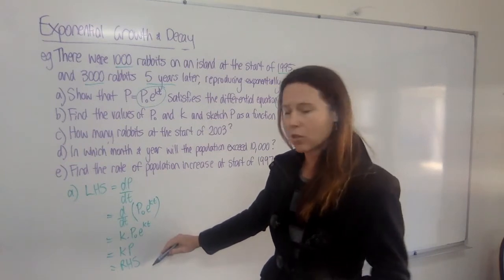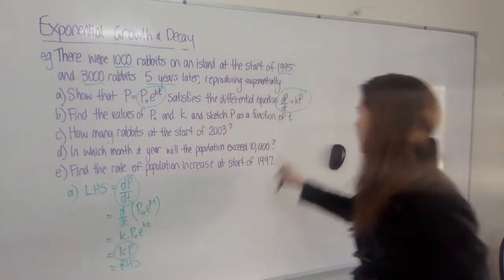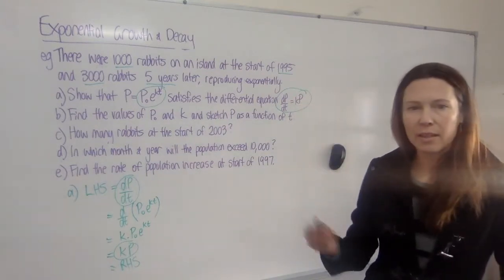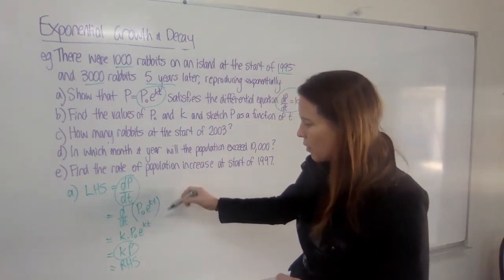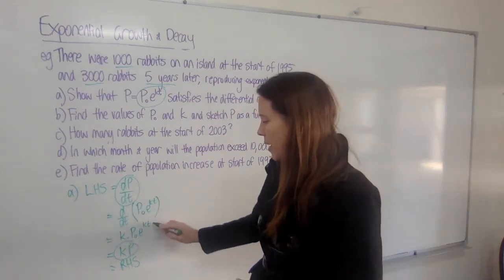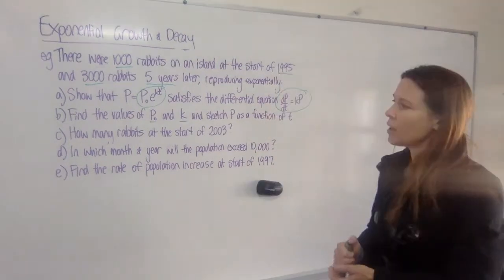Now, you need to have all of these steps. And because it's a show that question, we know that dP/dt is equal to kP. We were given that. So then the lines of working that you need will be both of these. And you're proving that you know how to differentiate this by bringing the k down, and then subbing in that value to give you the P.